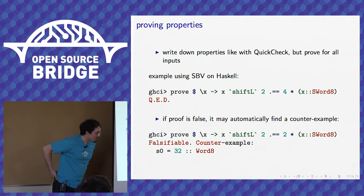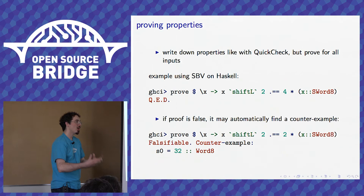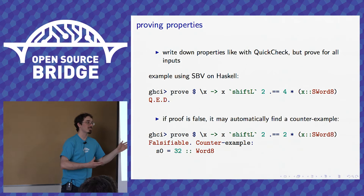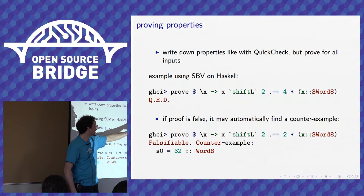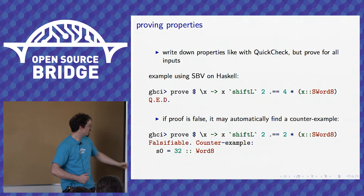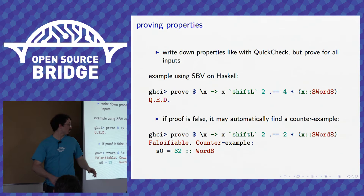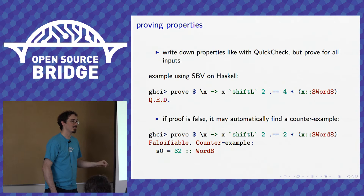Given the same concept of writing down a property that ought to hold true for all possible inputs, we can actually prove that property holds on that piece of code. For example, if I want to assert that taking x and bit-shifting it left by 2 bits is always the same as multiplying x by 4, I can ask something like SBV to prove that, and it comes back and says yes, that is true. Then I can ask it to prove that x shifted left by 2 equals 2 times x — that's not true — and it will come back and say no, that is wrong, and here is a value of x for which it does not hold. So it tells you not only that the property didn't apply, but why it didn't.